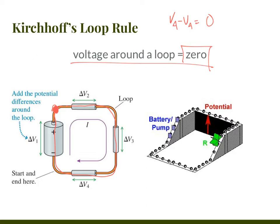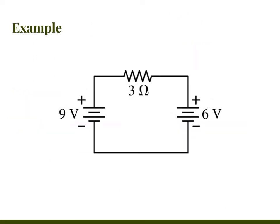This is an idea we've already been implicitly using, but it can be extended to cases with multiple batteries. When working with Kirchhoff's loop rule, you define a direction to evaluate the loop — I usually do clockwise. You pick a point to start; I'll start at the negative terminal and move around. It doesn't matter which direction you go or where you start, as long as you make a full loop.